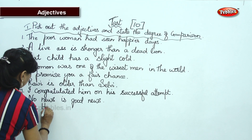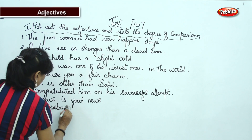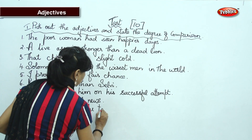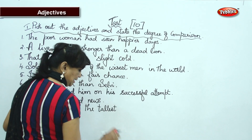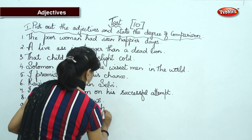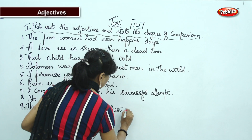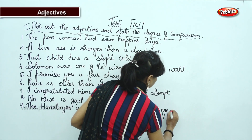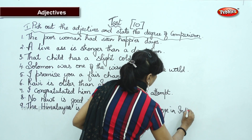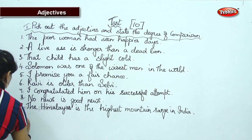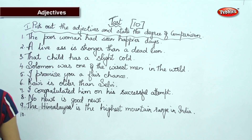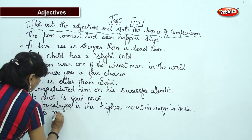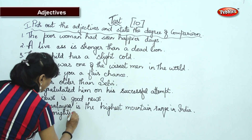Ninth one: 'The Himalayas is the tallest — or we can say highest — mountain range in India.' And the last one: 'The pen is mightier than the sword.'